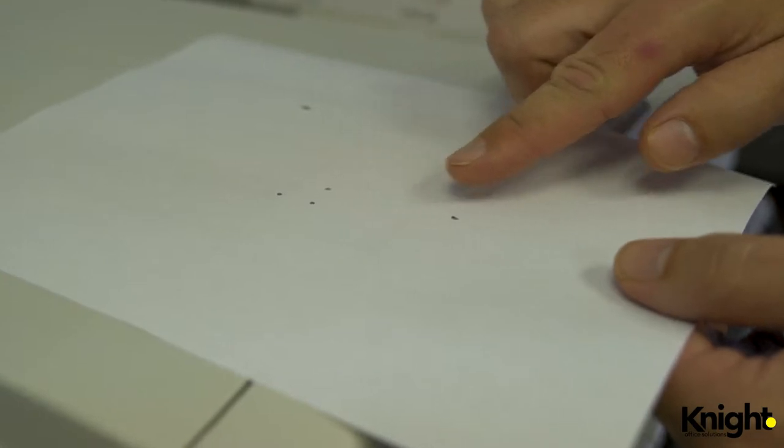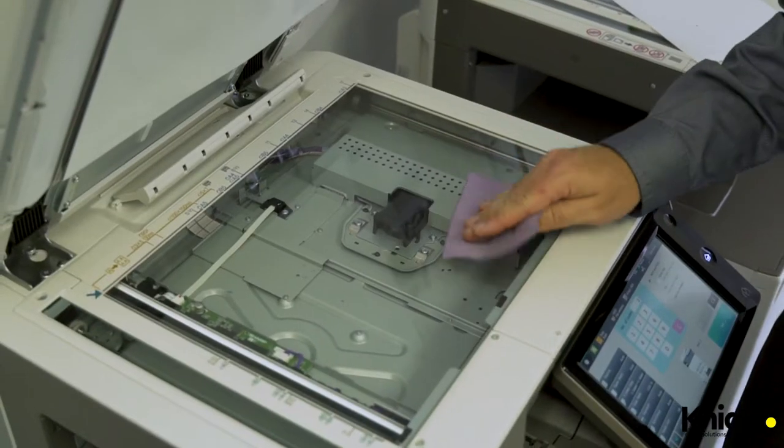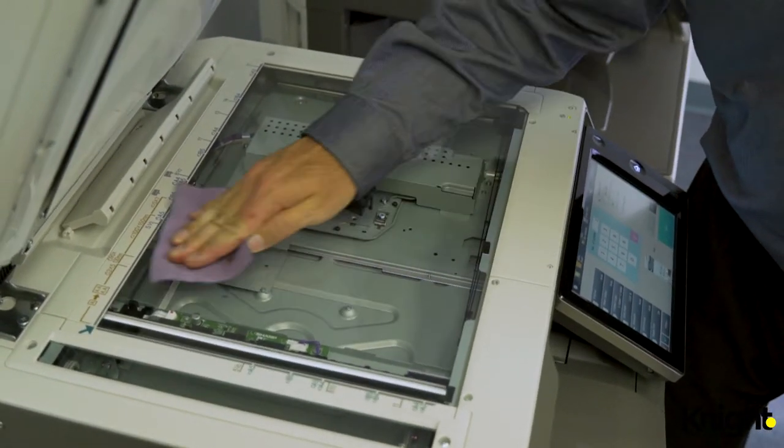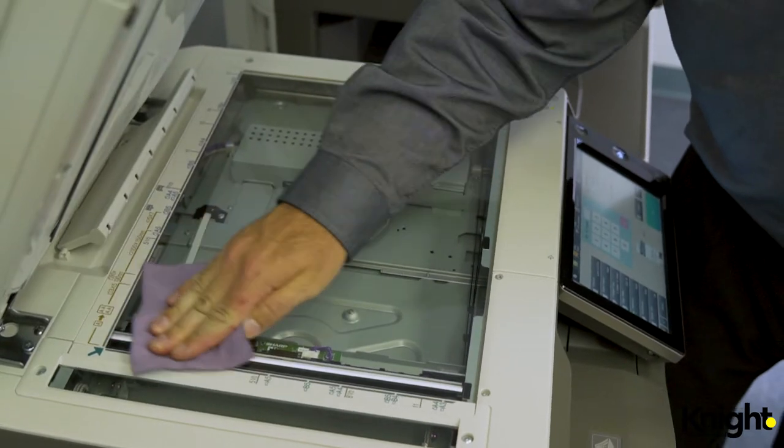Next we'll look at the problem of dots on your copies. This is often caused by marks on your main copy glass. Like before, clean the glass with lint-free cloth and a bit of alcohol to remove any dirt, streaks, pen marks, or white-out. Then lower the document feeder.